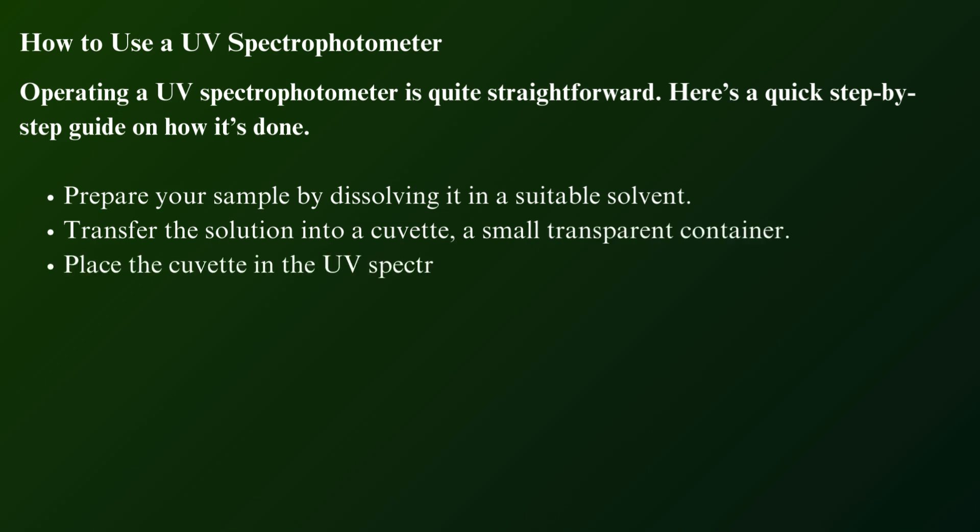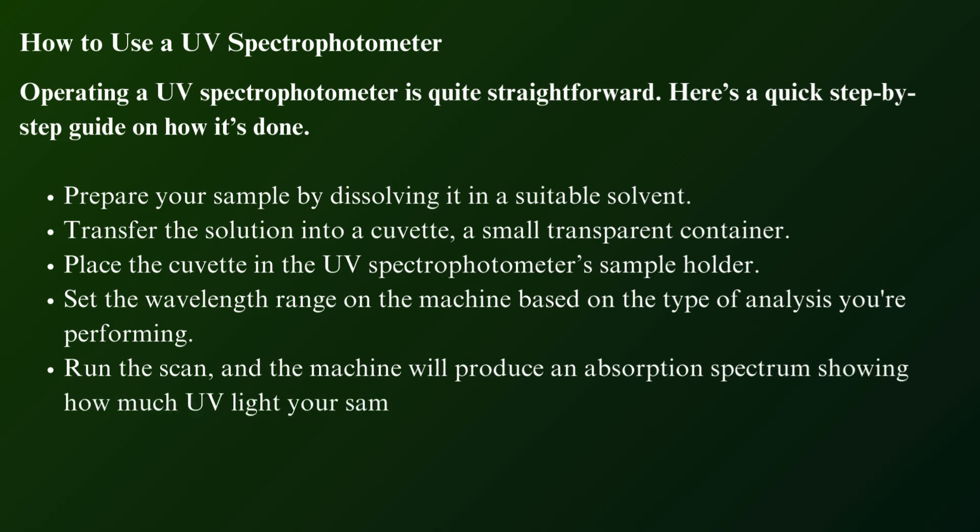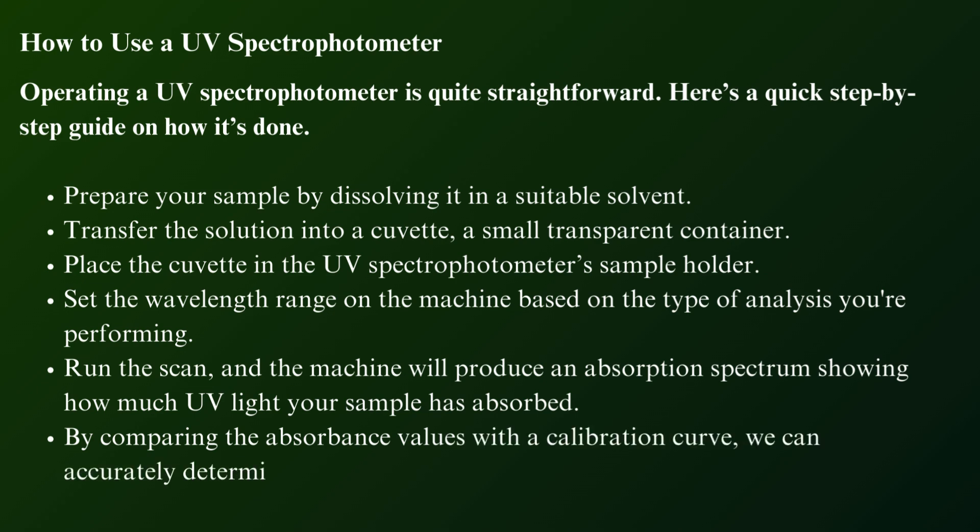Place the cuvette in the UV spectrophotometer's sample holder. Set the wavelength range on the machine based on the type of analysis you're performing. Run the scan, and the machine will produce an absorption spectrum showing how much UV light your sample has absorbed. By comparing the absorbance values with a calibration curve, we can accurately determine the concentration of the sample.